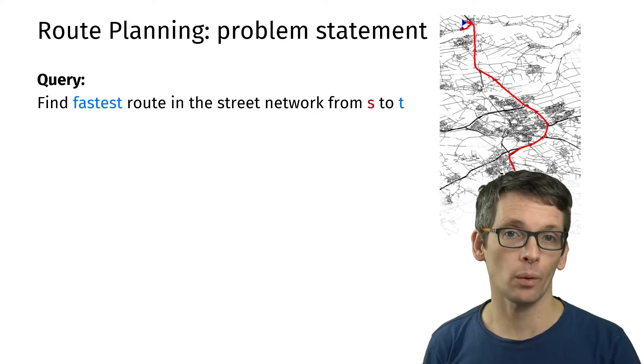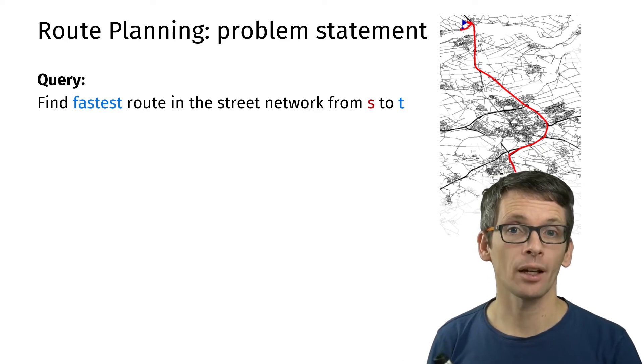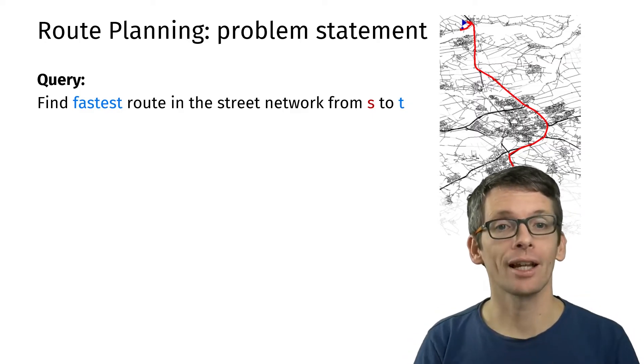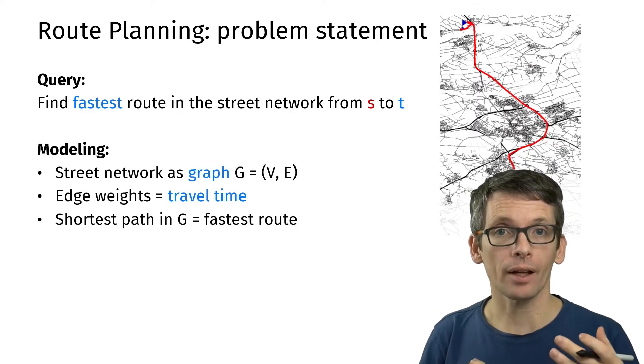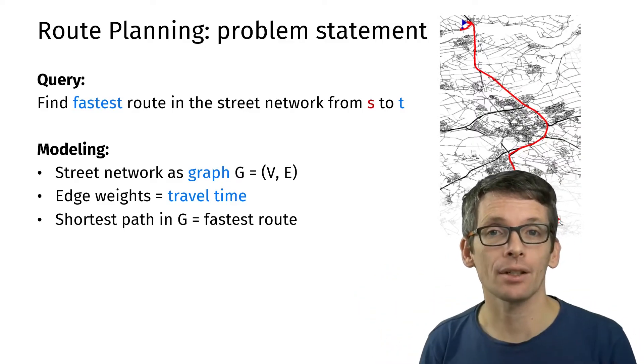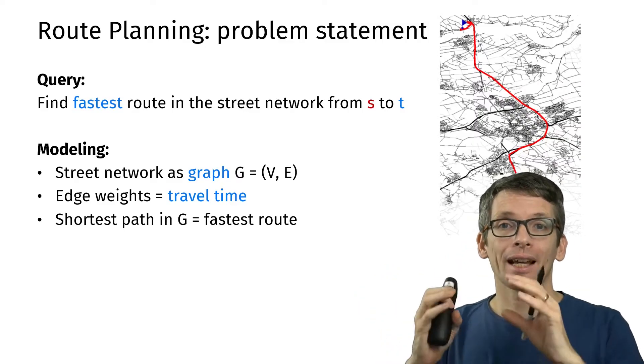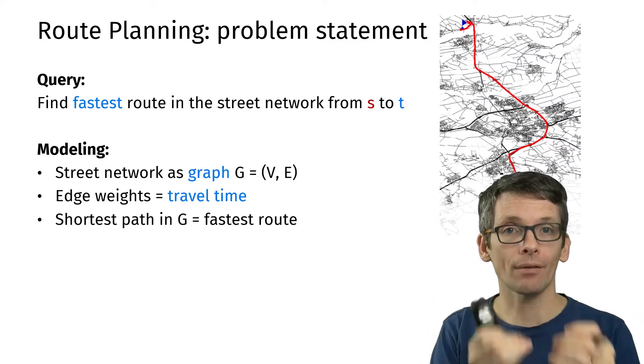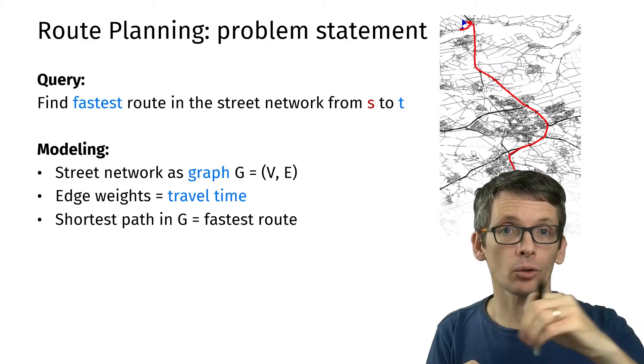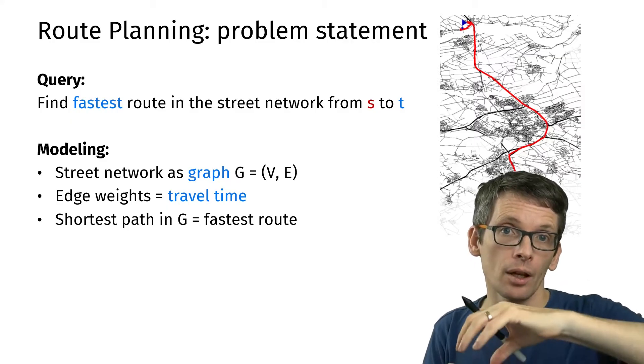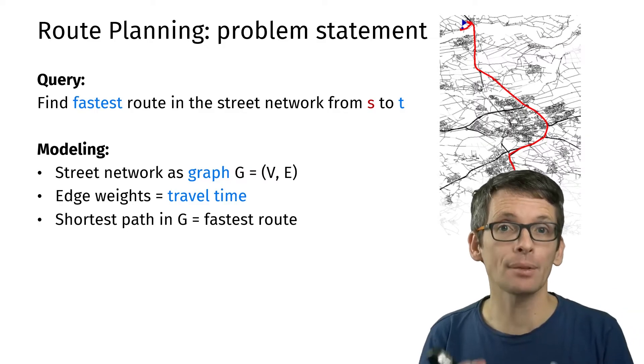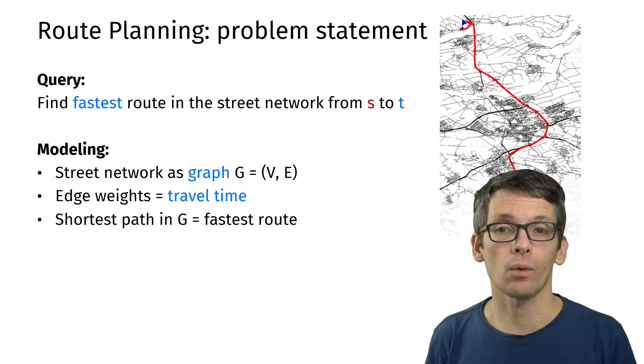Now back to route planning. In route planning we want to find the fastest route from a starting location s to a target location t. We can model that using graphs. We take the street network, model it as a graph, and as edge weights we take the travel times. Then the shortest path in that graph, so the smallest sum of travel times, is our fastest route.